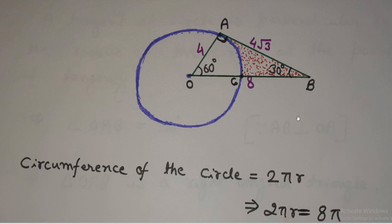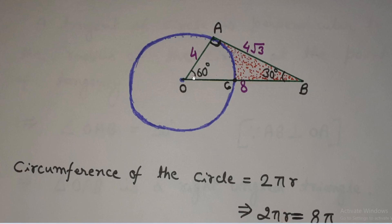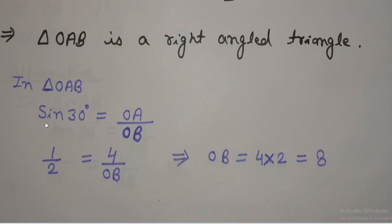In this right-angled triangle OAB, we can apply trigonometry to calculate any side. sin 30° equals OA divided by OB. OA is perpendicular for this angle and OB is the hypotenuse. So sin 30° equals OA which is 4 divided by OB that we want to calculate. sin 30° equals 1/2, and OA is 4, so 1/2 equals 4 divided by OB. From this we get OB equals 4 × 2 equals 8. So we got OB as well.